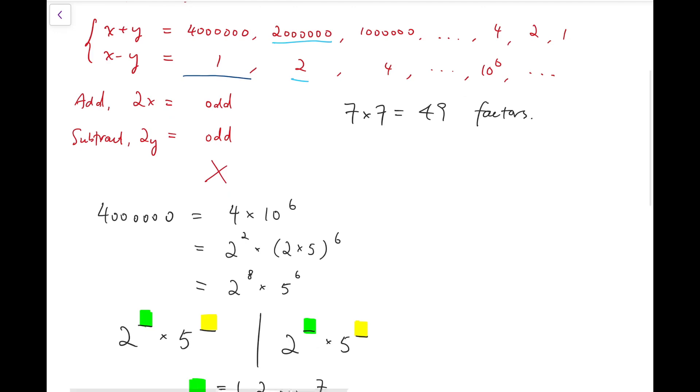So that means, among all these cases, from 2 million all the way down to 2, there are actually 49 systems that we can find a valid solution.